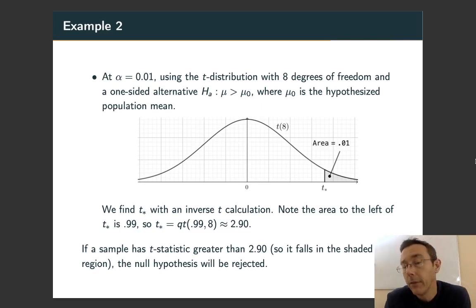So now we have this picture. We have an area of 0.01 to the right of t*, which means we have an area of 0.99 to the left. So we do an inverse t calculation. In R the command is qt(0.99, 8), and we get t* ≈ 2.90.